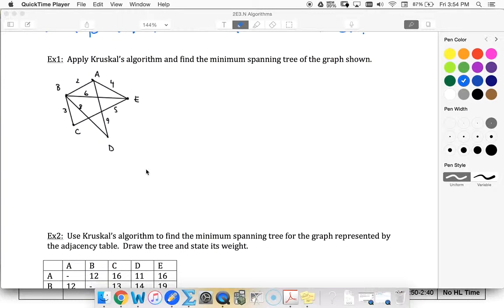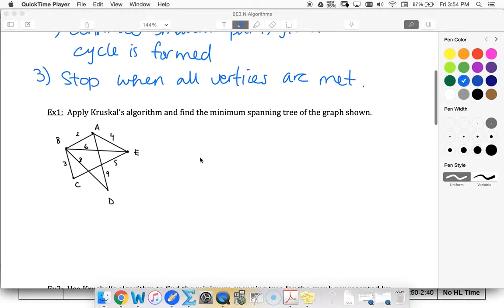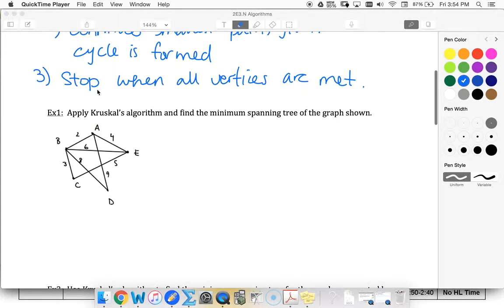All right, now we're looking at finding the minimum spanning tree of this graph. And up here when I talked about Kruskal's algorithm, I said stop when all vertices are met. You'll know that when you have n minus 1 edges.